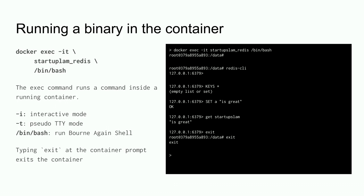There are two ways to execute commands inside a container. We're going to exec into the existing running container and bash into it — creating a bash shell — then run Redis CLI inside it. To do that, use `docker exec`, then `-it` to create an interactive TTY terminal, then the container name `startup_slam_redis`, and then the command you want to execute — `/bin/bash`. The bin folder and bash exist inside the container's filesystem. If it executes correctly, you should see the hostname and username you're signed in with, which should be root at some hash.